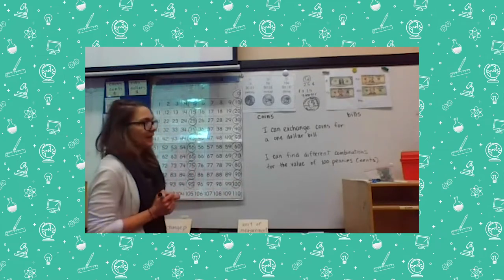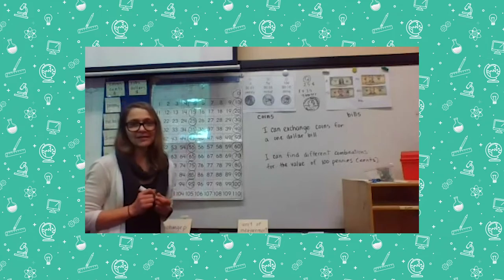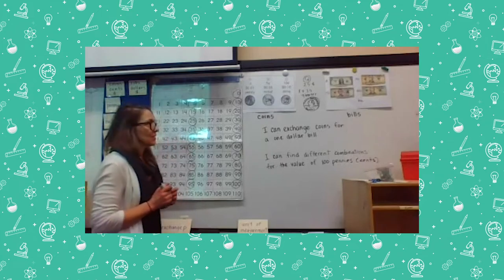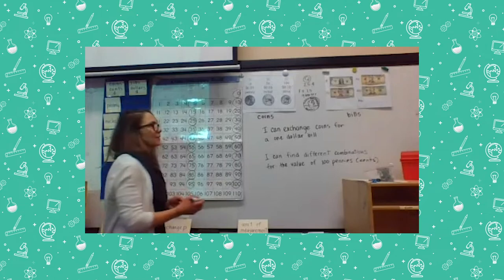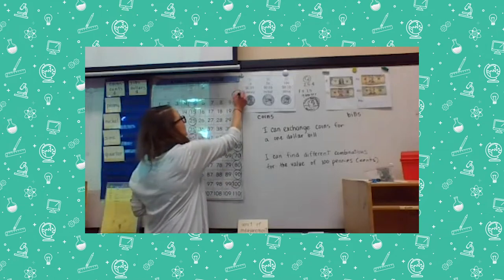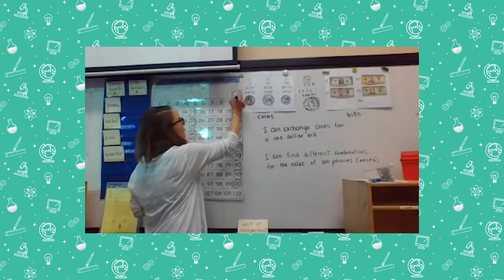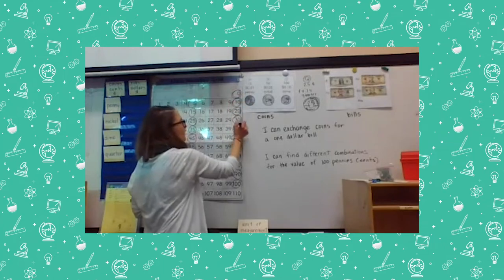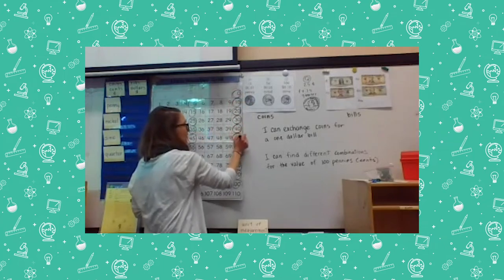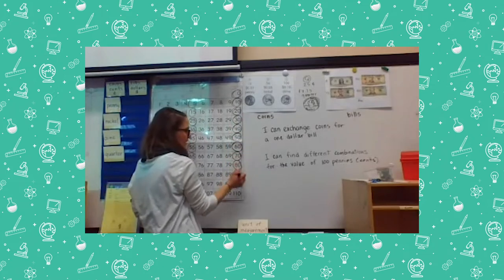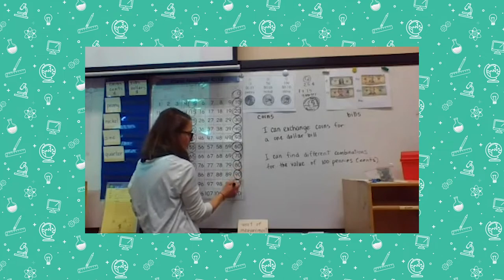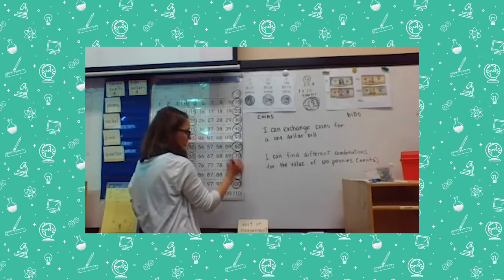Now we're going to count by tens. We're going to start at zero and end at a hundred. Here we go: zero, ten, twenty, thirty, forty, fifty, sixty, seventy, eighty, ninety, one hundred. Stop.